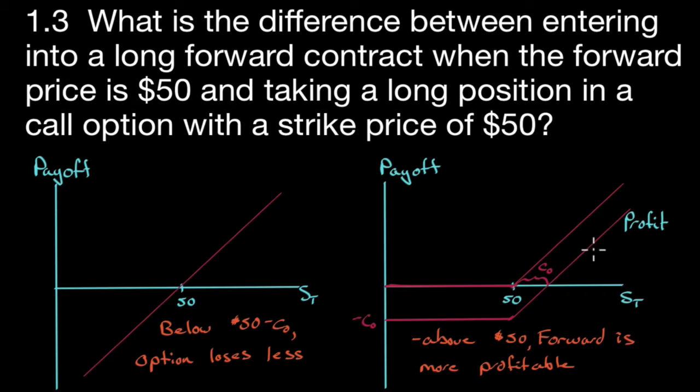The difference with the option that we don't have with the forward is that the payoff line and the profit line are different. The profit line gets shifted downwards by the amount of the call. So the buyer had to pay the seller something, that's the premium, which we'll denote C0. If it's not exercised, while the payoff of the contract is zero, the profit of the contract is negative up to the $50 point, and then it starts to climb until it hits a break-even point.